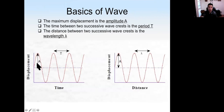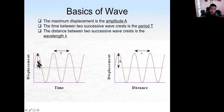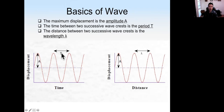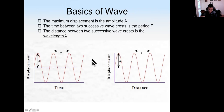For waves, we have amplitude, which is the maximum displacement the wave can generate. The period T is the time between two successive wave crests. The distance between two successive wave crests is called the wavelength, lambda. So amplitude, period T, and wavelength — those are the basic characteristics of a wave.